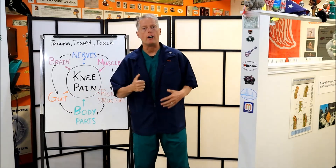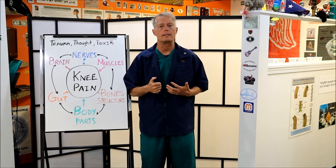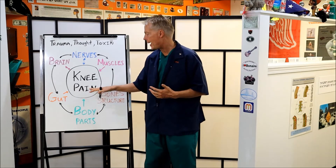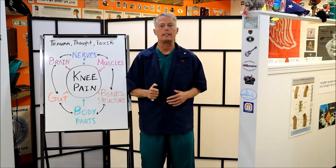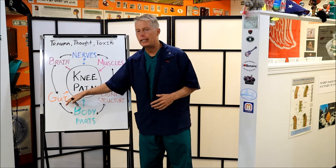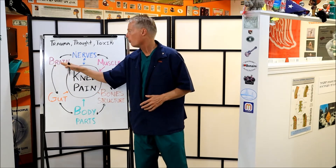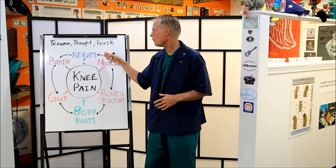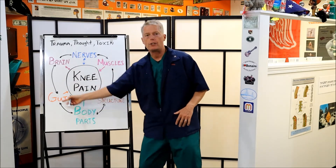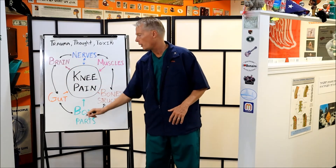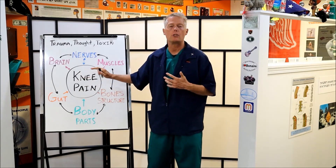People with leaky gut have autoimmune disease — so rheumatoid arthritis, arthritis that attacks the knee, the structure of the knee — that will cause knee pain. Your gut with leaky gut or gut problems affects your brain because your gut talks to your brain, which talks to the nerves and the muscles and the bones and the body parts and the whole knee. Everything works together. Your gut is a big factor when it comes to your knee.